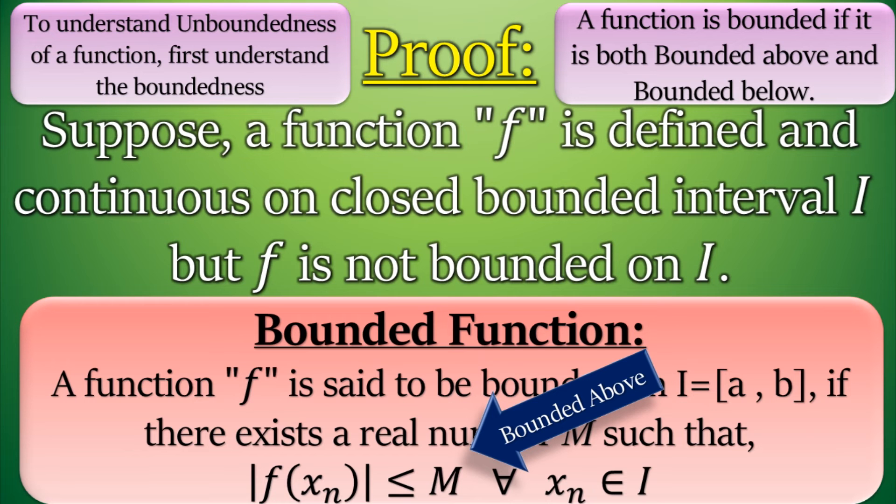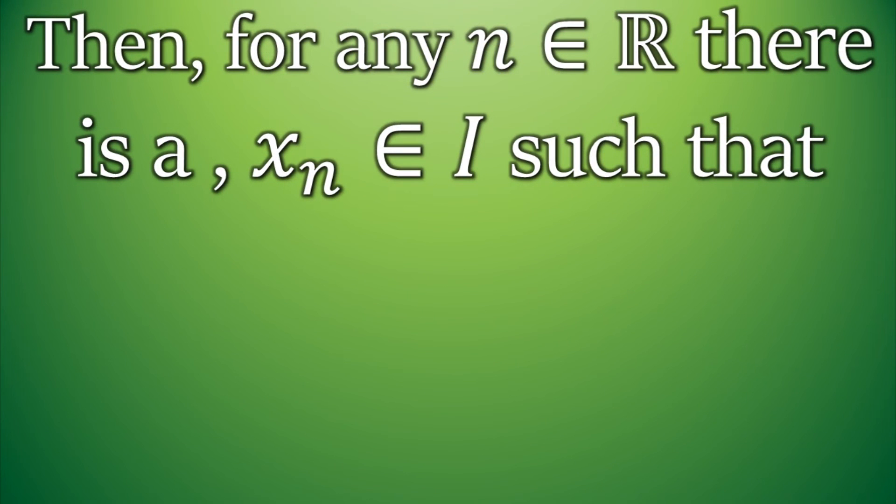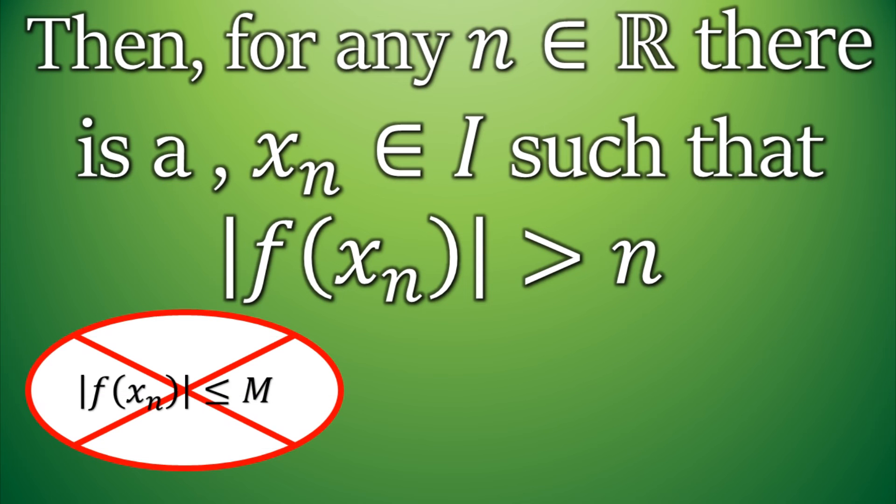You might not get it now, but let's move to the next slide and I will explain everything. As we know that the function f is not bounded, this means that for some n belonging to real numbers, the absolute value of the images of f(xₙ) are greater than that real number n. So basically we are negating the condition for a bounded function here.